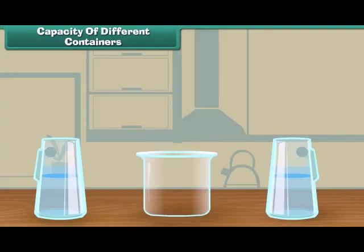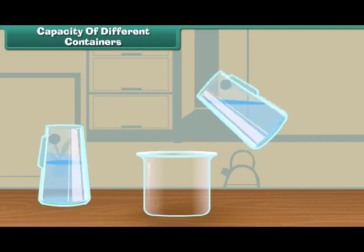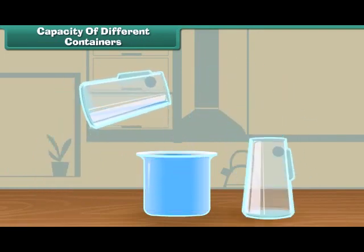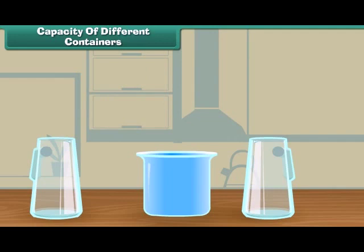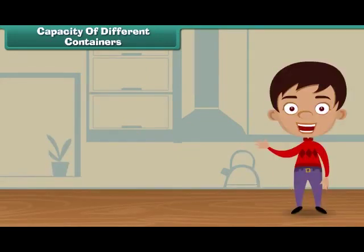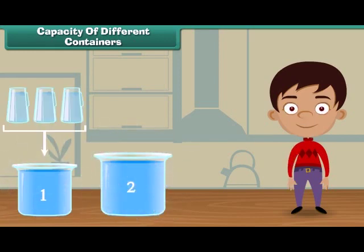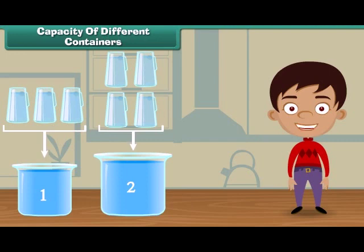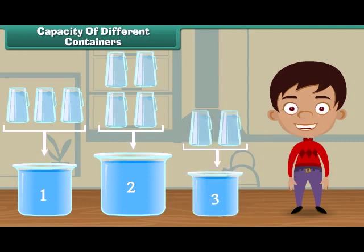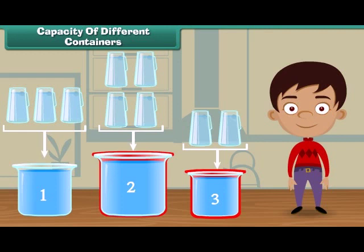Now let us fill the third vessel. One and two. Two jugs of water fill the third vessel. Friends, we have seen that vessel one is filled with three jugs of water, vessel two is filled with four jugs of water, and vessel three is filled with two jugs of water. It means vessel three holds the least water, and vessel two holds the most water.